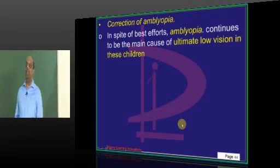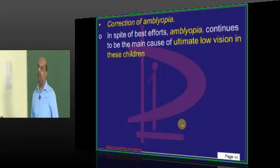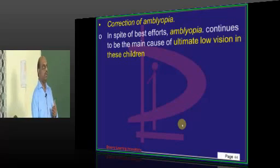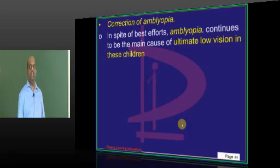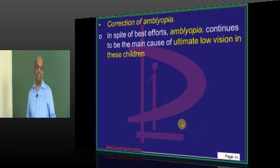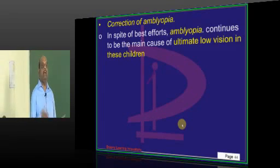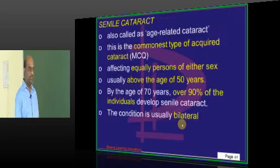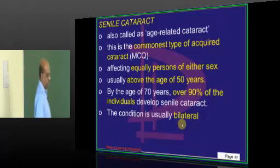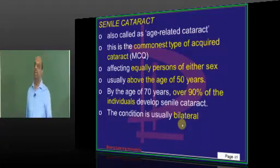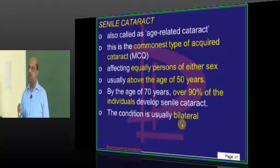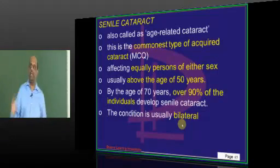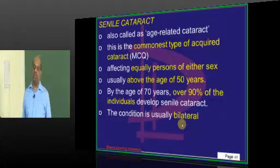In pediatric cataract management, the most important vision-threatening challenge for every ophthalmologist is the possibility of amblyopia developing after cataract extraction. You must be very sure about this. At least 10 to 15 important points are now clear about congenital and developmental cataract.